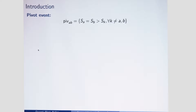The main tool for our analysis will be the pivotal event. What we call a pivotal event between two candidates A and B is the specific event in which the score of A is equal to the score of B, and these scores are higher than the score of all other candidates. This is a very rare event, but it is the only event in which the vote of the voters will matter, so they condition their votes on this type of event. If this is the most likely pivotal event, a voter will vote for A if he prefers A to B, and for B if he prefers B to A.